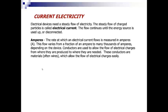Amperes. The rate at which an electrical current flows is measured in amperes. This flow varies from a fraction of an ampere to many thousands of amperes, depending on the device. Conductors are used to allow the flow of electrical charges from where they are produced to where they are needed. These conductors are materials, often wires, which allow the flow of electrical charges easily.